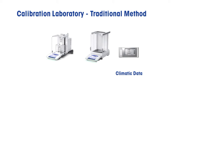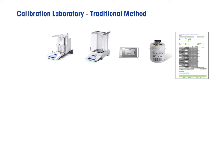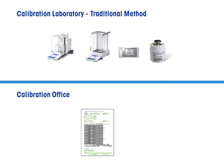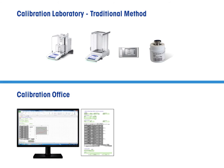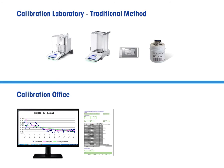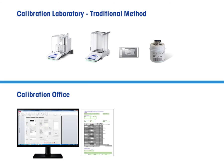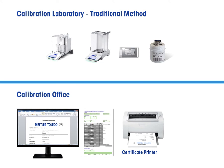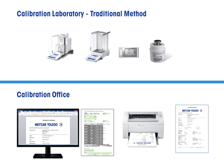Traditional mass calibration requires a mass comparator, climate sensor for air density calculation, and spreadsheet templates to record the measurement data. The completed template is taken to the office, and data is transferred to the computer spreadsheet to calculate intermediate results. The intermediate results are imported or transcribed to another database system, and the certificate is generated. After detailed analysis of the certificate content, it can be printed and signed off by the calibration manager.